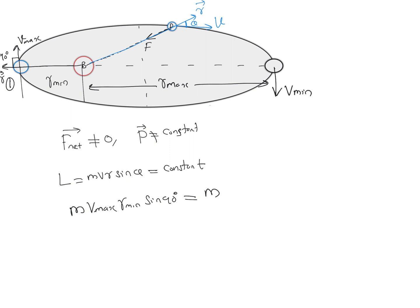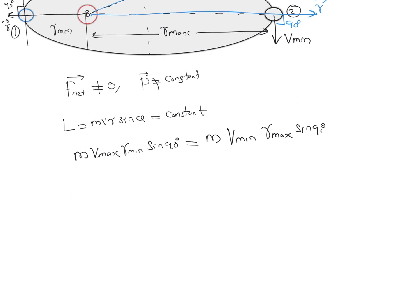At point 2, the velocity is minimum. Here also the velocity vector and position vector make an angle of 90 degrees, so we write: m × v_min × r_max × sin90 = constant. Equating the two points and cancelling m and sin90 (which equals 1 at both points), we get: v_max × r_min = v_min × r_max = vr sinθ at any point.